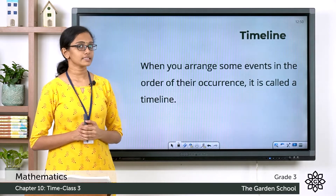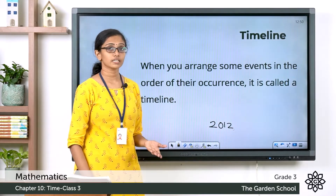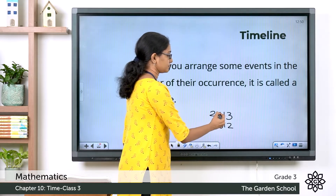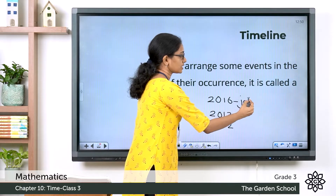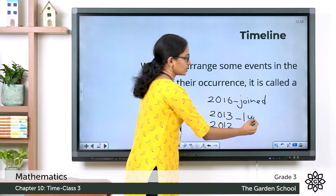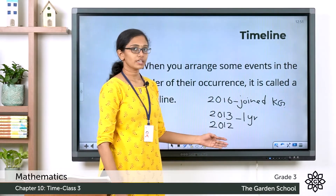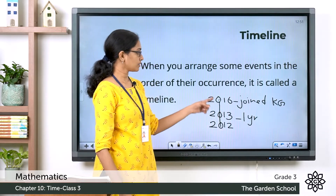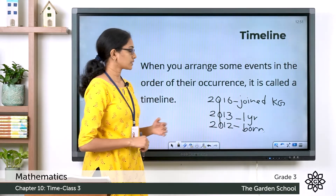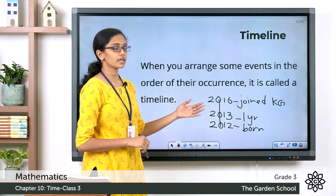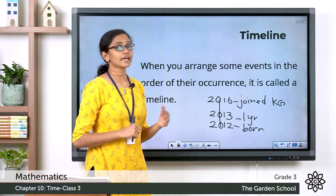Here is a simple example. Suppose you were born in the year 2012, then in 2013 you turned 1 year old, and in 2016 you turned 4 and joined kindergarten. So here we have arranged these three events on a timeline — on a line — with your year of birth and descriptions of what happened in each particular year.